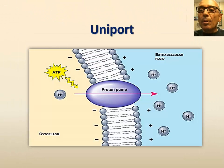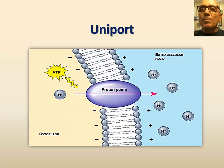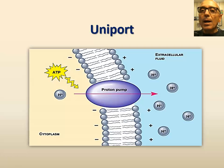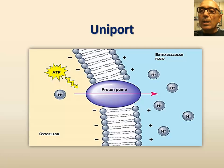A common example of a uniport protein system is that of proton pumps. These membrane proteins actively transport protons, or hydrogen ions, out of the cell or membrane-bound organelles. Most types of proton pumps are powered by ATP, whether directly or indirectly. Proton pumps are commonly found in plant cells, bacterial cells, as well as mitochondria and chloroplasts.